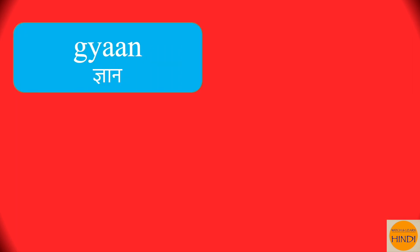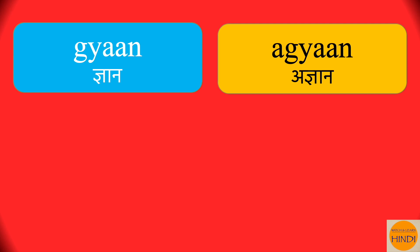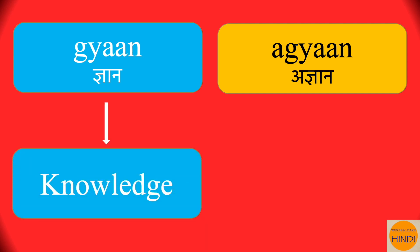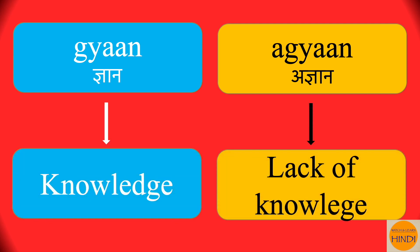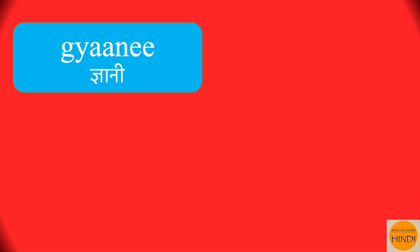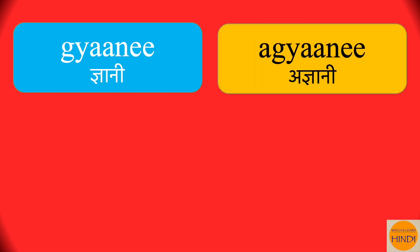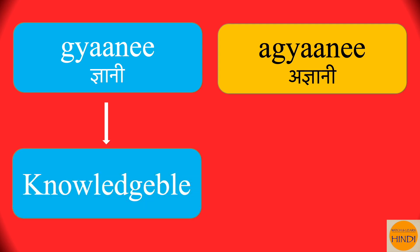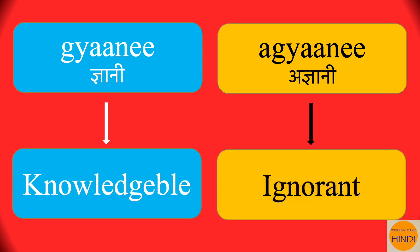Gyan. Agyan. Gyan is knowledge. Agyan is lack of knowledge. Gyan. Agyan. And from gyan comes gyani, and the antonym is agyani. Gyani is knowledgeable. Agyani is ignorant, or somebody who lacks knowledge. Gyani. Agyani.